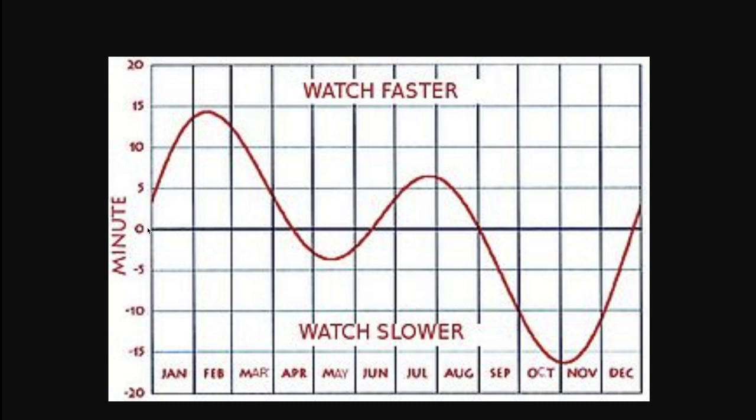So for example, solar noon in my time zone will be 12 noon in Albany, New York. I am 9 degrees to the west of Albany, New York, so my solar noon comes 9 degrees later and at 4 minutes per degree. That means that my solar noon will be 36 minutes later at 12:36.